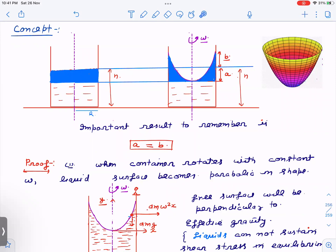So what is the important result? If you remember that result and it's very easy to remember, then these questions are going to be very easy for you. You can just write the solution in one line. So what happens if this is the original level, and when the container starts rotating, the amount by which the level goes down, if that is A, and the amount by which the level goes up with respect to the original level, if that is B, then A comes out to be equal to B. That's a very important, yet very simple result.